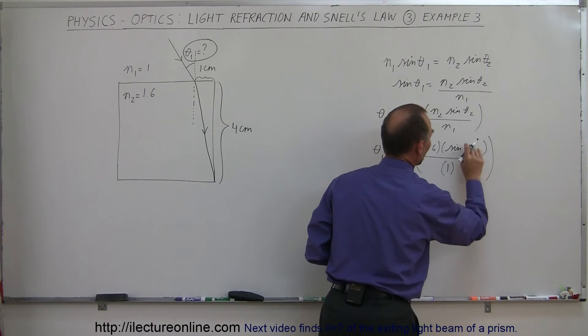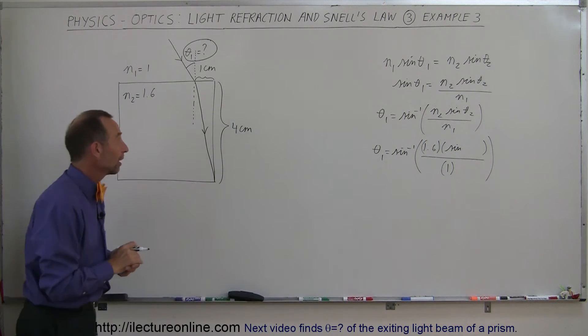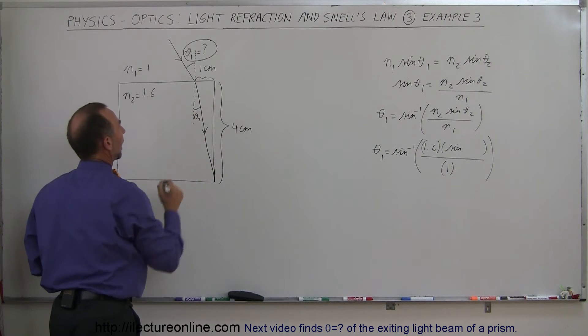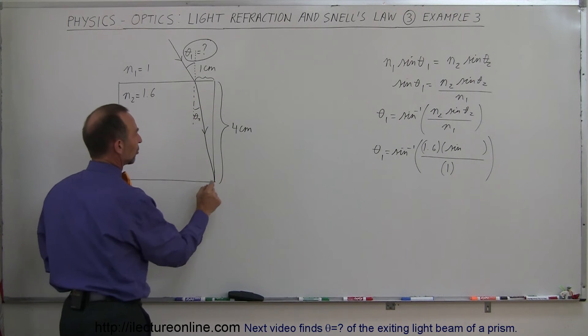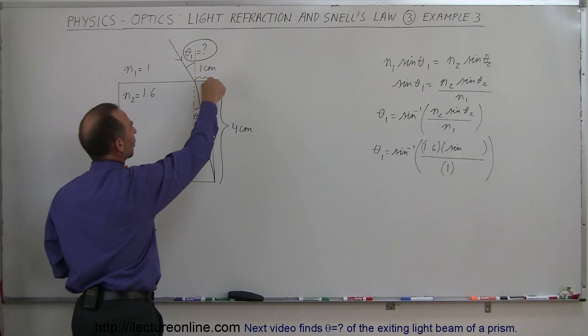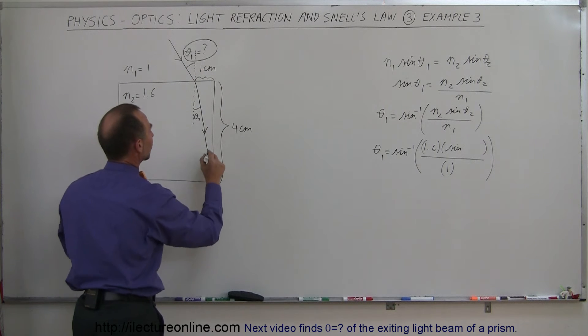Okay, so what we have to do now is find out what theta2 is. We need to find out this angle right here, theta2. How do we find that? Well, we have some information here. We know that this vertical distance is 4 centimeters, this horizontal distance is 1 centimeter. So what we can do here is we can figure out what this angle is here. So let's call this angle phi.